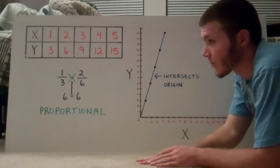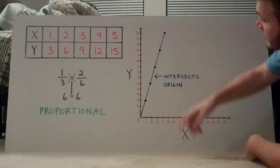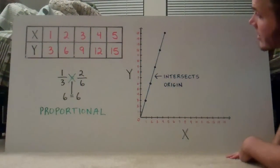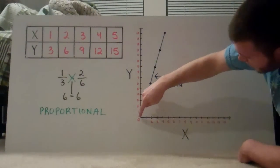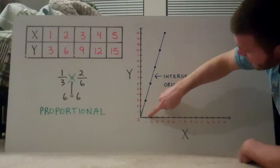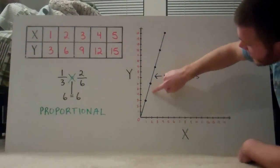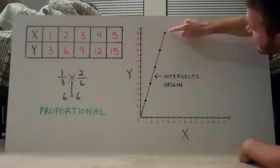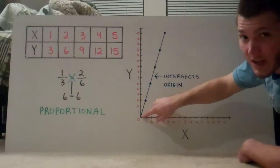What I want you to do is plot those on a graph. I did. I've got my X axis and I've got my Y axis. So I plot X is 1, Y is 3, there's my point. 2 and 6, X is 2, Y is 6. And then 3 and 9, 4, 12 and 5, 15. When I connect all the dots, the line, look where it goes guys.